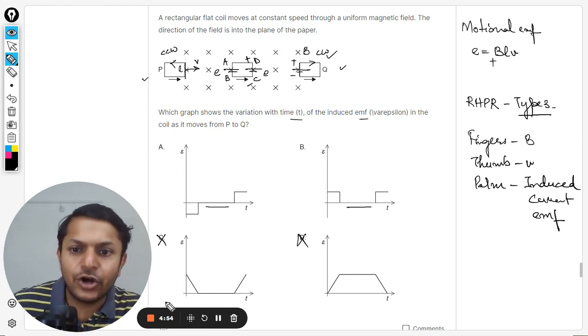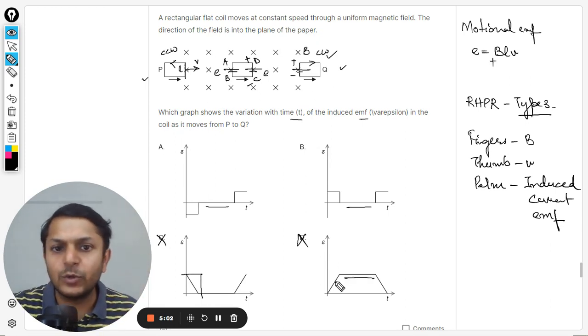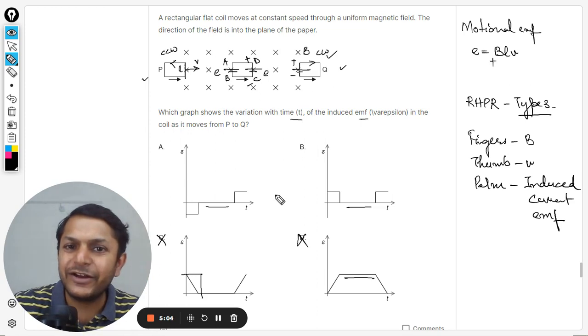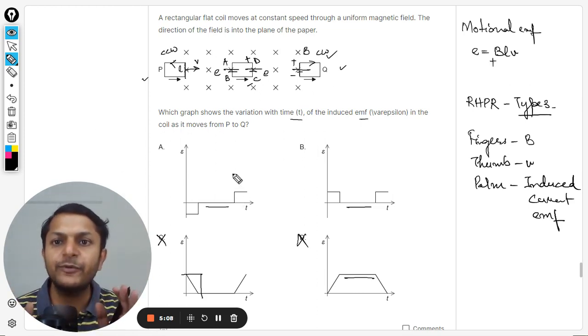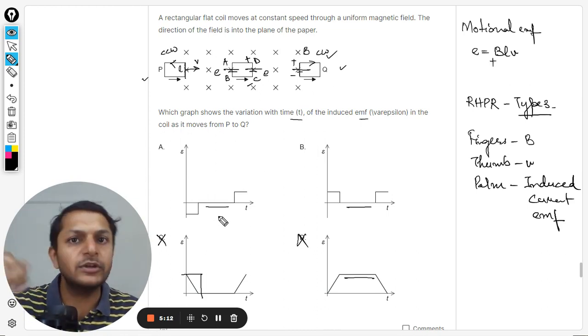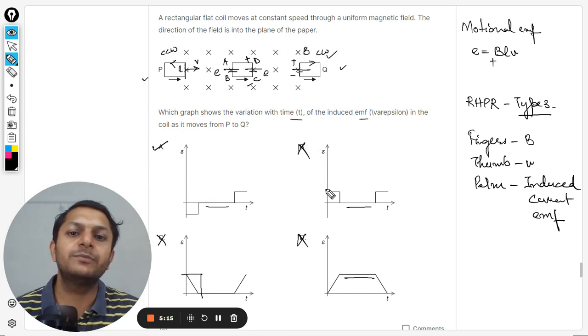First of all, C is wrong because EMF is constant, there is no variation. D is wrong because in the middle part the EMF should be equal to zero. So our answer should be either A or B. Another thing that we have found is that the EMF produced will be of the opposite nature from both cases. So one will be positive, another will be negative. Definitely A will be the answer. B is also going to be wrong.